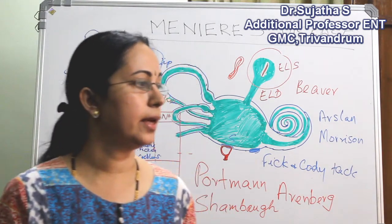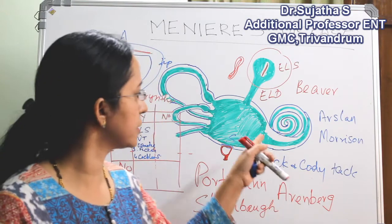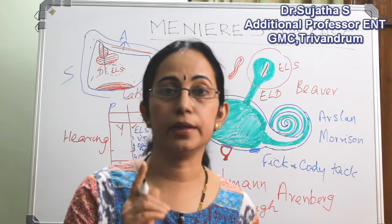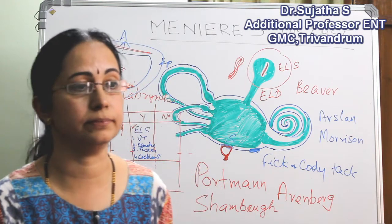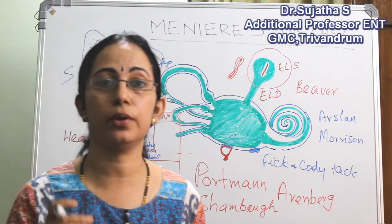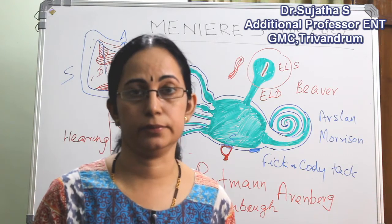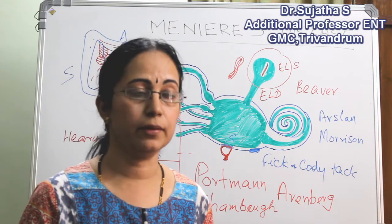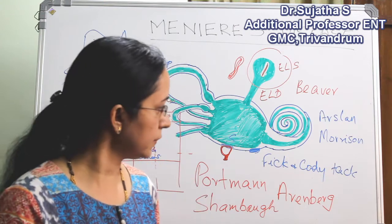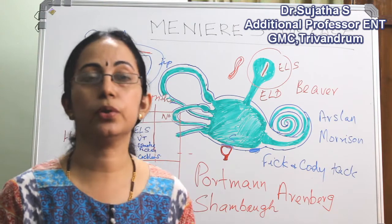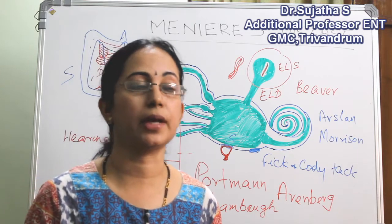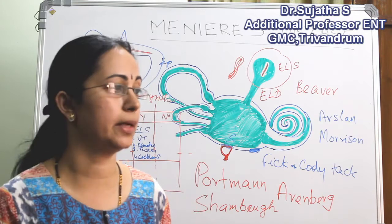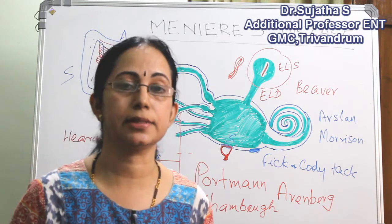What did we do in cochleosarculotomy? There we make a fracture of the osseous spiral lamina. Here comes the osseous spiral lamina. If you have any doubt, see my video on anatomy of the inner ear — all details about the osseous spiral lamina are given there. In cochleosarculotomy, we fracture the osseous spiral lamina so that a permanent fistula is made between the cochlea and the saccule.